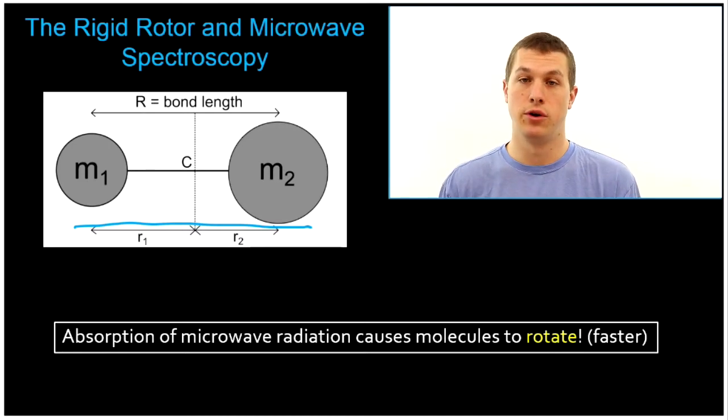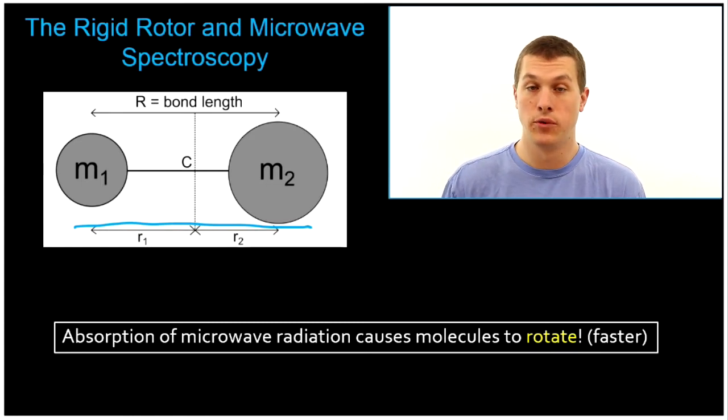And we can use the rigid rotor to get out all the different energy levels our molecule can be at in terms of its rotational energy. And that'll allow us to calculate the energy gaps between the different rotational states, and that helps us think about what wavelengths of light or what energies of light it would absorb when it changes between the different rotational states.